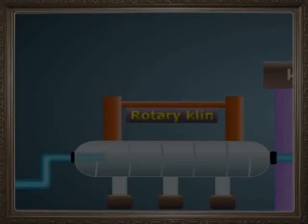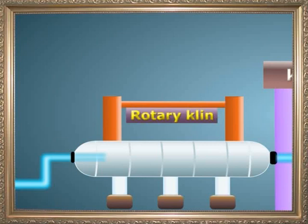Through the wet process and dry process, we obtained the raw slurry and raw meal respectively. Whatever process is followed to get these raw materials, they are now processed to get the cement. In the next phase, the raw slurry or raw meal is processed through a rotary kiln.